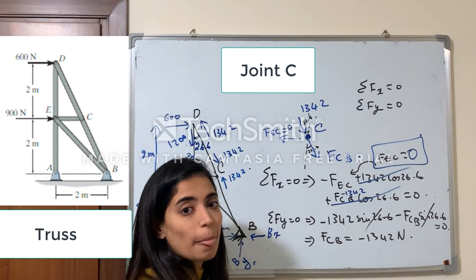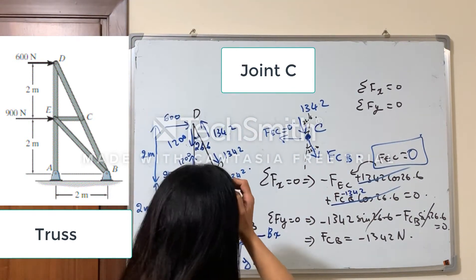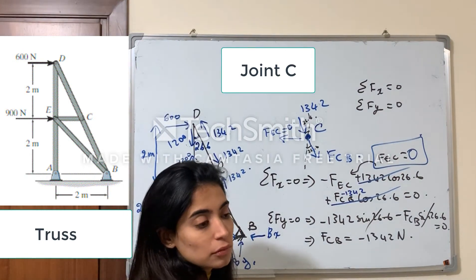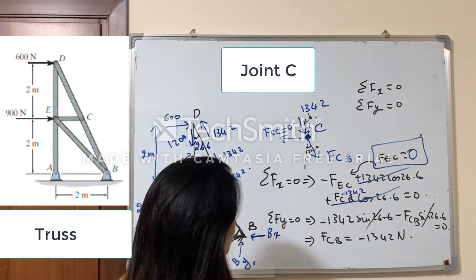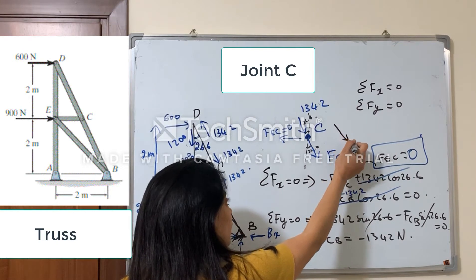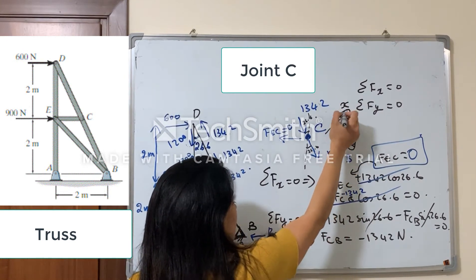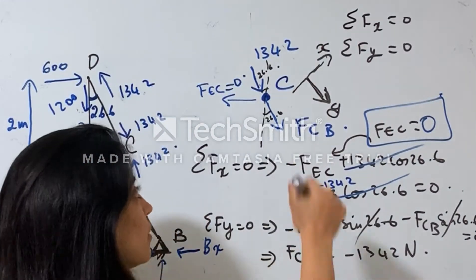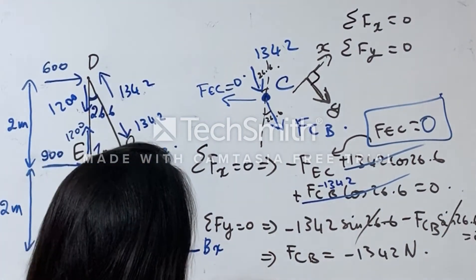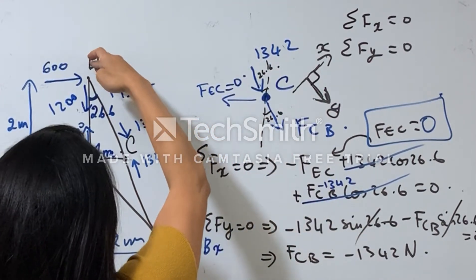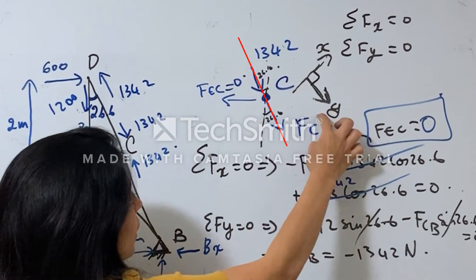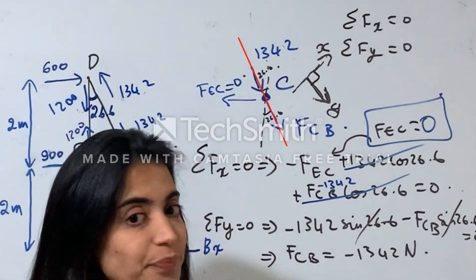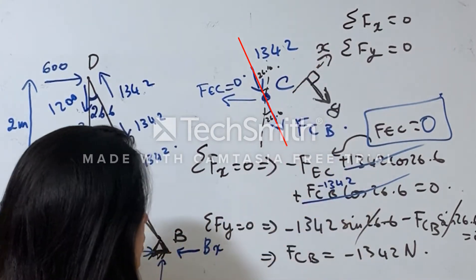Now, I can know that the force FEC will be equal to zero by doing a rotation of the x and y axes. If I take y in the direction of line CB — the same direction as FCB and the collinear force — then the perpendicular to this is x. You can take any reference for each joint; what matters is that these two axes are perpendicular.